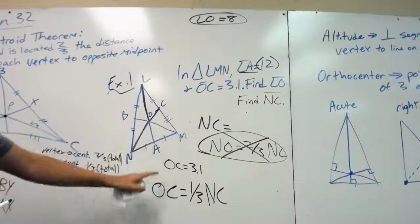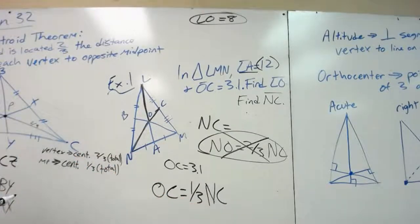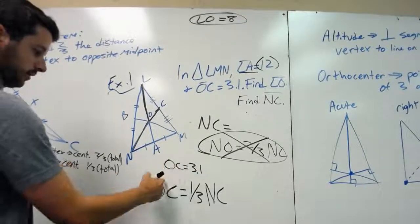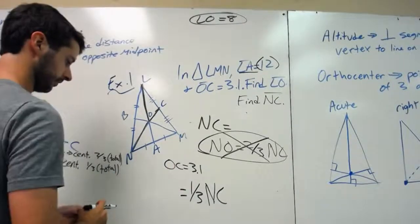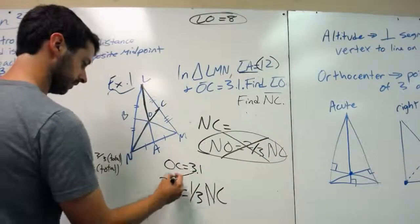OC equals one-third of NC, NC being the total. So now that we know OC, we can plug in 3.1. Substitute that value.